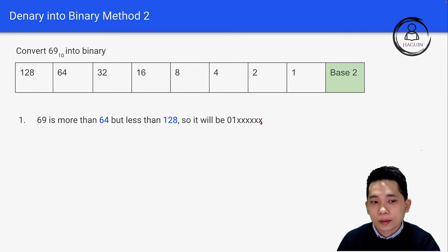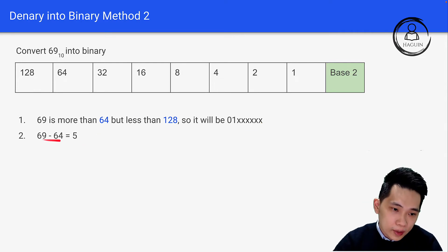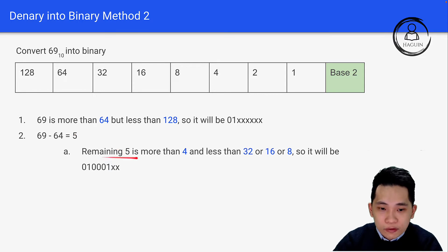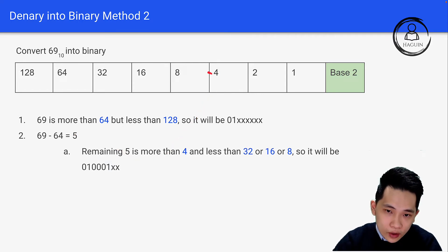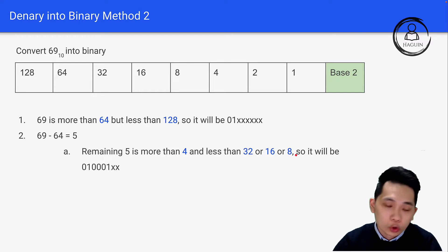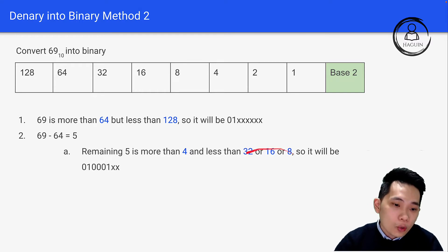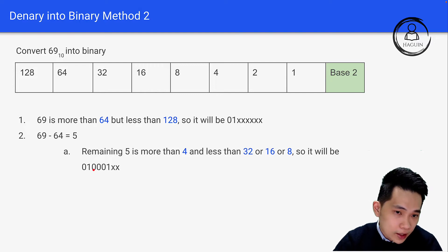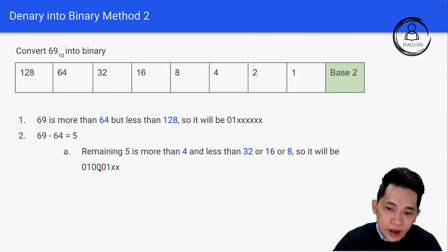Next step: 69 minus 64 equals 5. The remaining 5 is more than 4 but less than 8, 16, or 32. So the bits for 32, 16, and 8 are all 0, and the bit for 4 is 1.